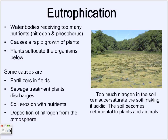Some causes of eutrophication: for example, fertilizers in fields. They can be artificial or organic, but they both contain nitrogen. They're in the fields, and then there's runoff — water on the soil that runs off to somewhere else, usually a body of water. Now the nitrogen in that runoff is in a body of water, causing an overload of nitrogen, making weeds, algae, and plants grow on the surface of the water, choking everything underneath.